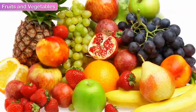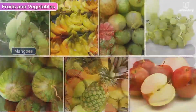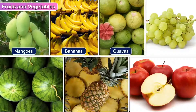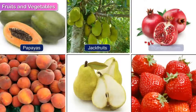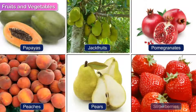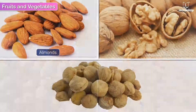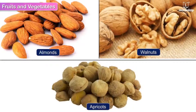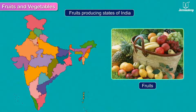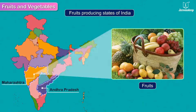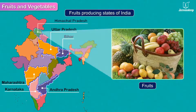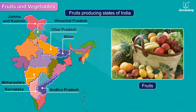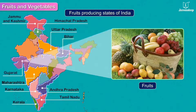A large variety of fruits are grown in India, like mangoes, bananas, guavas, grapes, melons, pineapples, and apples. Additionally, papayas, jackfruits, pomegranates, peaches, pears, strawberries, and dry fruits like almonds, walnuts, and apricots are also grown here. Major fruit-growing states are Andhra Pradesh, Maharashtra, Karnataka, Bihar, Uttar Pradesh, Himachal Pradesh, Jammu and Kashmir, Tamil Nadu, Kerala, and Gujarat.